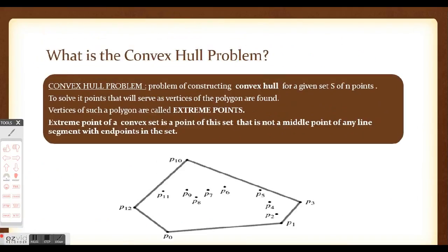The convex hull problem deals with constructing the convex hull for a given set S of n points. To solve this problem, we find the extreme points, which are the vertices of the convex polygon. An extreme point is a point of set S that is not the middle point of any line segment with endpoints in the set. In this figure the extreme points are P10, P3, P1, P0, and P12. The remaining points are interior to the convex polygon, and this is the smallest convex hull that can be constructed.